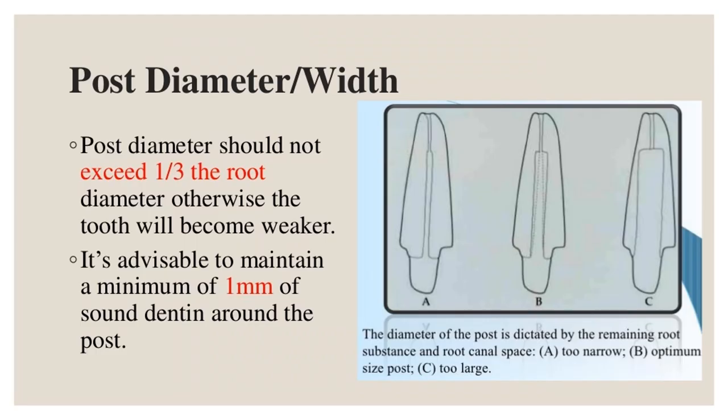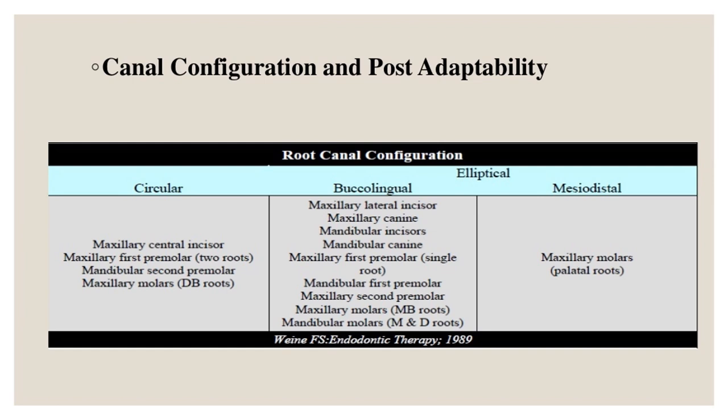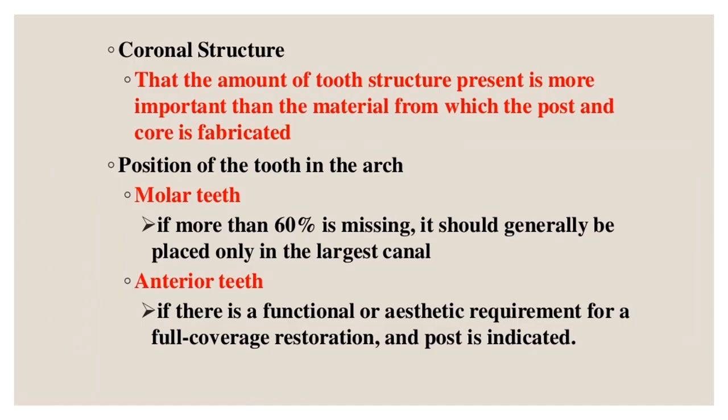Post diameter should not exceed one-third the root diameter; otherwise the tooth will become weaker. It is advisable to maintain a minimum of one millimeter of sound dentin around the post.